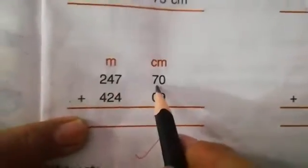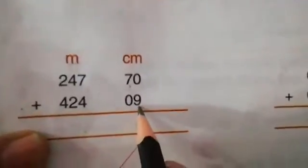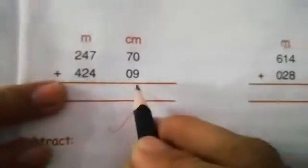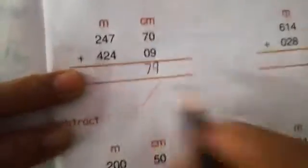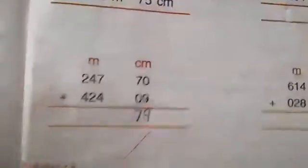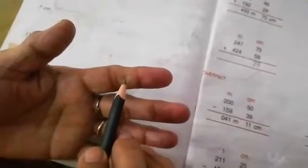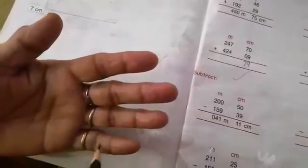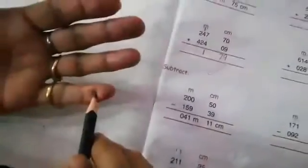247 meter and 70 centimeter plus 424 meter and 9 centimeter. 0 plus 9 is 9. 7 plus 0 is 7. Now 7 plus 4: count on fingers with me. 1, 2, 3, 4, 5, 6, 7, then 4 more: 1, 2, 3, 4. Count all numbers: 1 through 11. So 1, 1, carry 1.